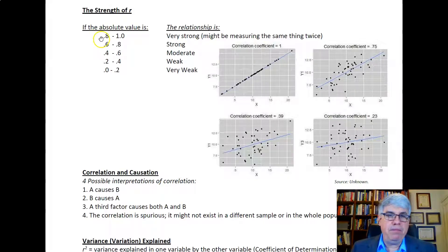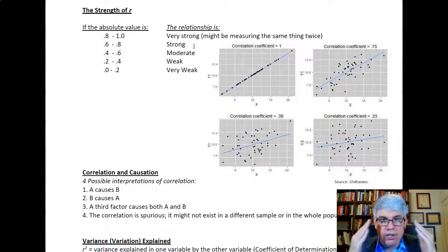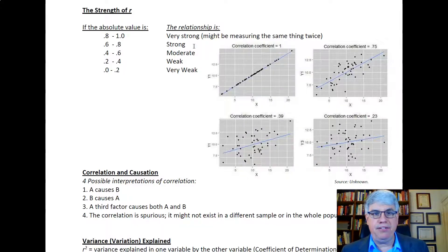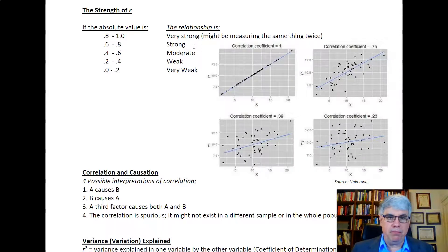If it's between 0.8 and 1, that's considered very strong, and you might be measuring the same thing twice. Very rarely are we going to get any psychological variables related to each other that highly because there's just so much error when we measure things. Between 0.6 and 0.8 is strong.